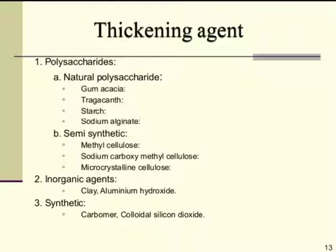Synthetic thickening agents include carbomer and colloidal silicon dioxide. Carbomer is used as a thickening agent in the concentration of 0.1 to 4% (0.1 to 4 grams per formulation). Colloidal silicon dioxide is a white non-gritty powder that acts as a suspending or thickening agent in the concentration of 0.5 to 4%, used at 1.5 to 4 grams in suspension formulations.